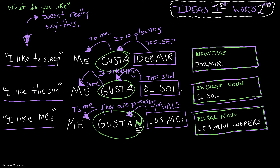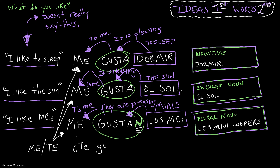Life's going to be kind of boring if we're just walking around saying I like, I like. Maybe you want to say you like — so you would just change that me to a te. And if you wanted to make it a question, just put some question marks on there. So I could say, ¿te gustan los mini coopers? — do you like mini coopers?